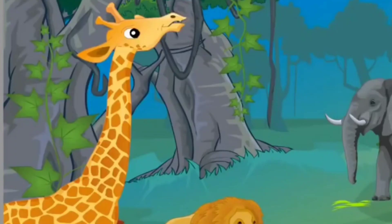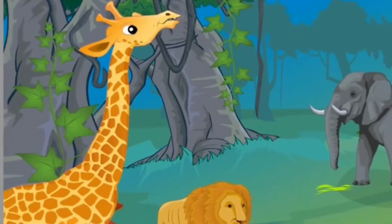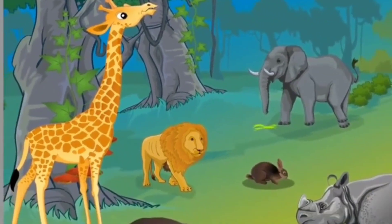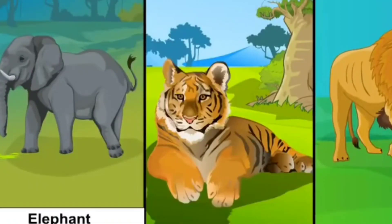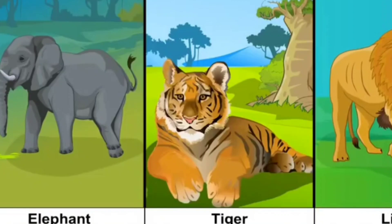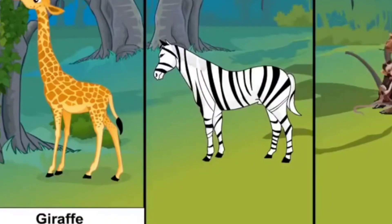As you know, we have 2 types of animals: wild animals and domestic animals. Some animals live in the forest — they are called wild animals. Some of the wild animals are elephants, tigers, lions, zebras, monkeys, snakes, crocodiles and deer.